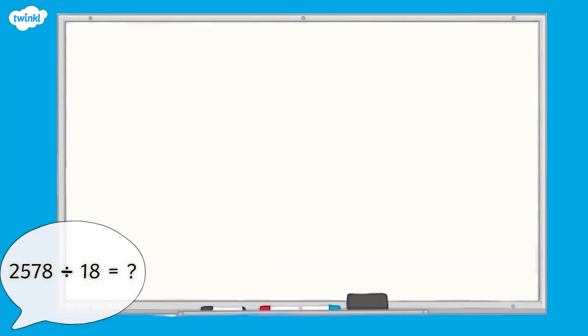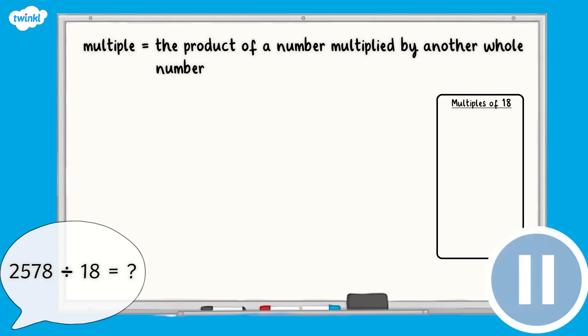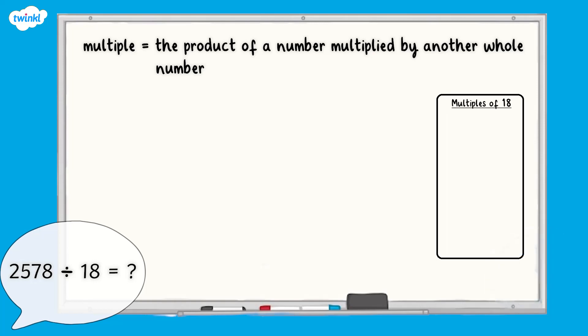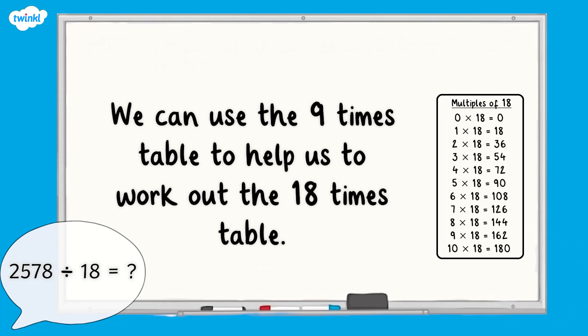Now it's your turn. Let's work through this division calculation together. The calculation is 2,578 divided by 18. First of all, we need to list the multiples of 18. Pause here and write the first ten multiples of 18. Think carefully about which times tables could help you. Did you get the first ten multiples of 18? Here they are. You may have used your nine times table because 18 is double nine, so the 18 times table is double the nine times table.